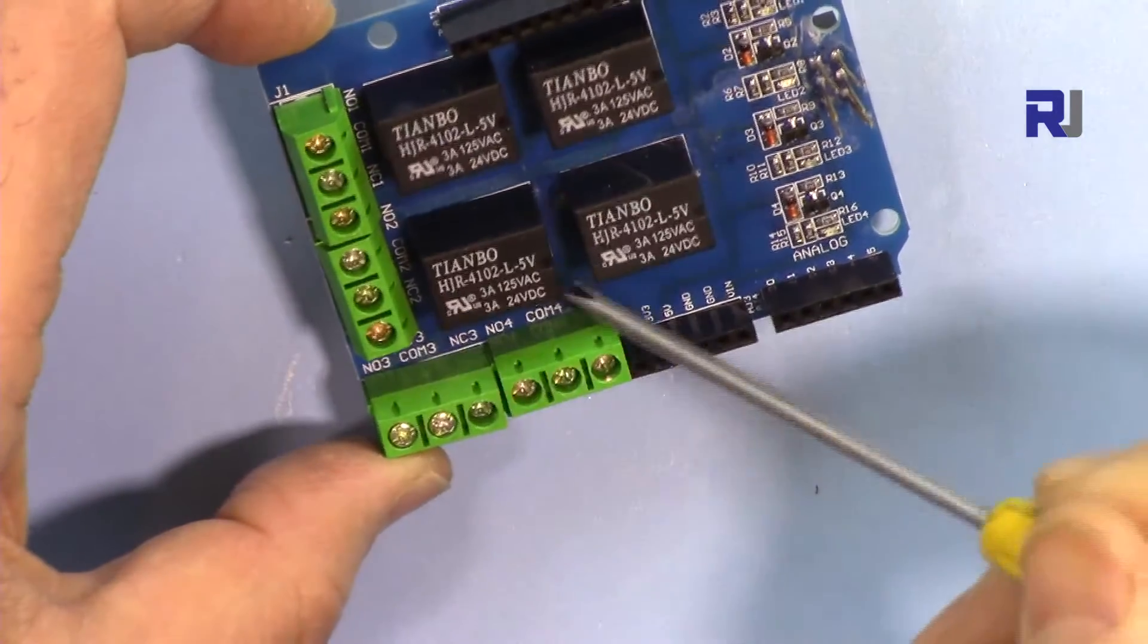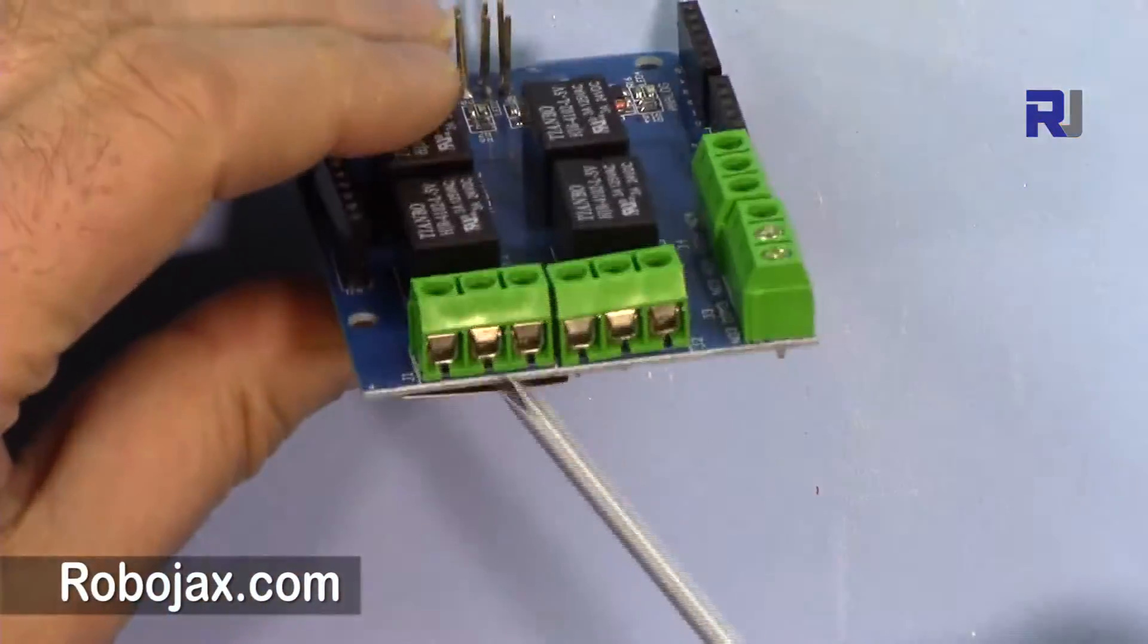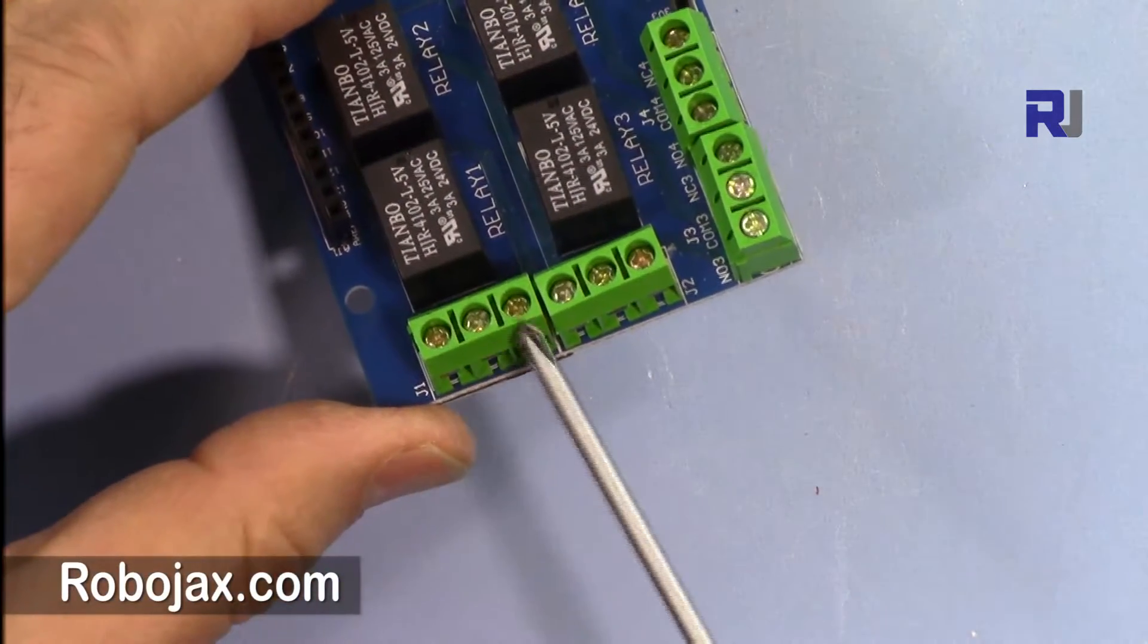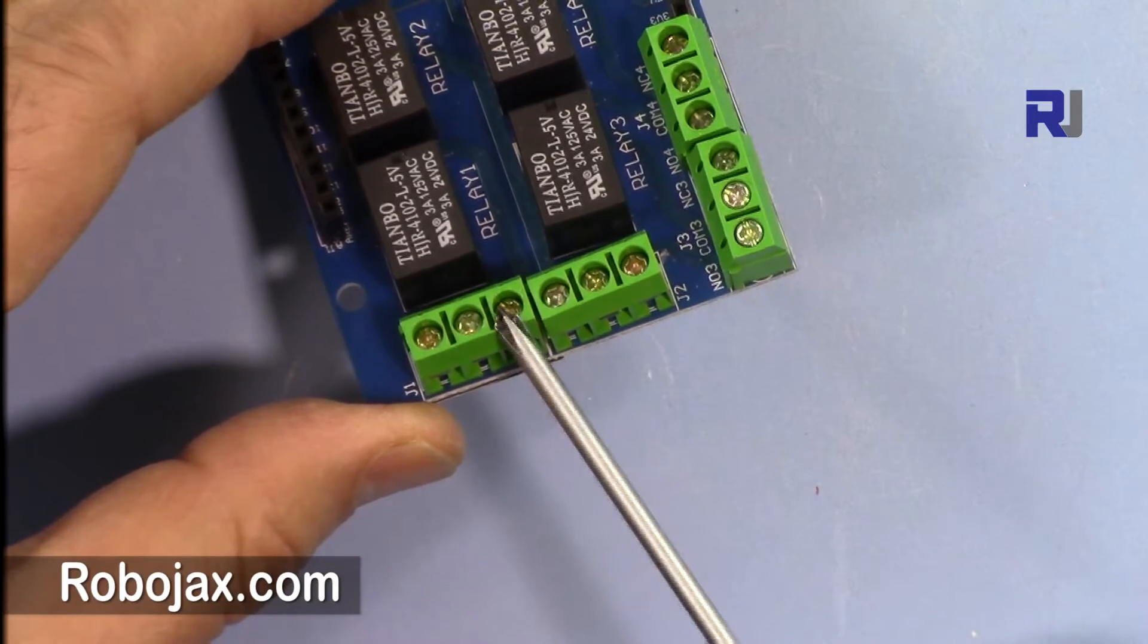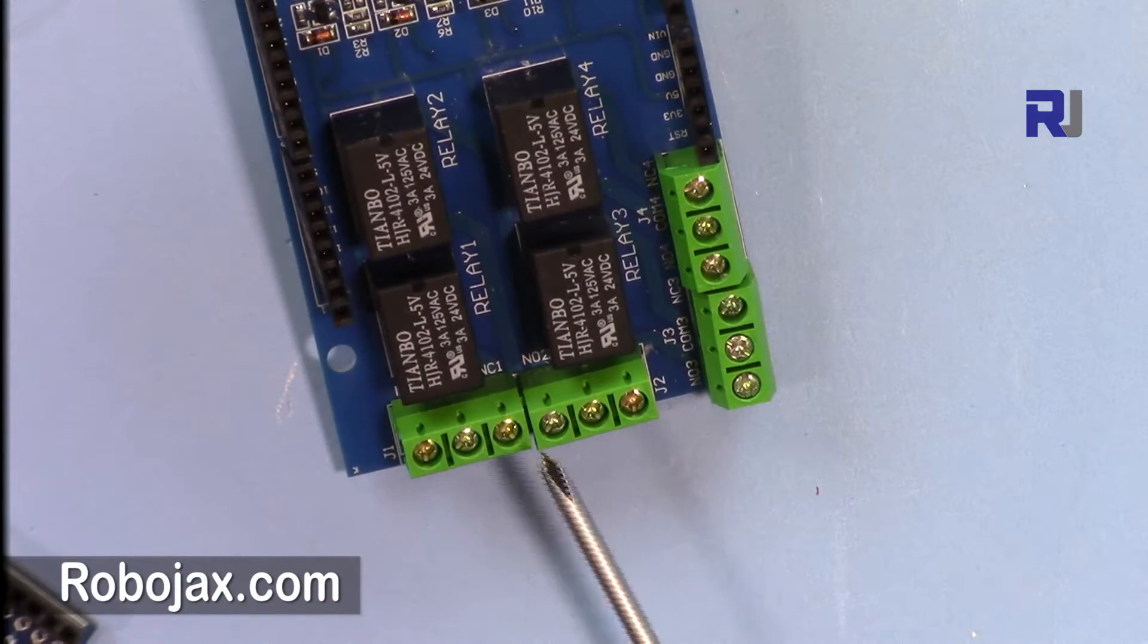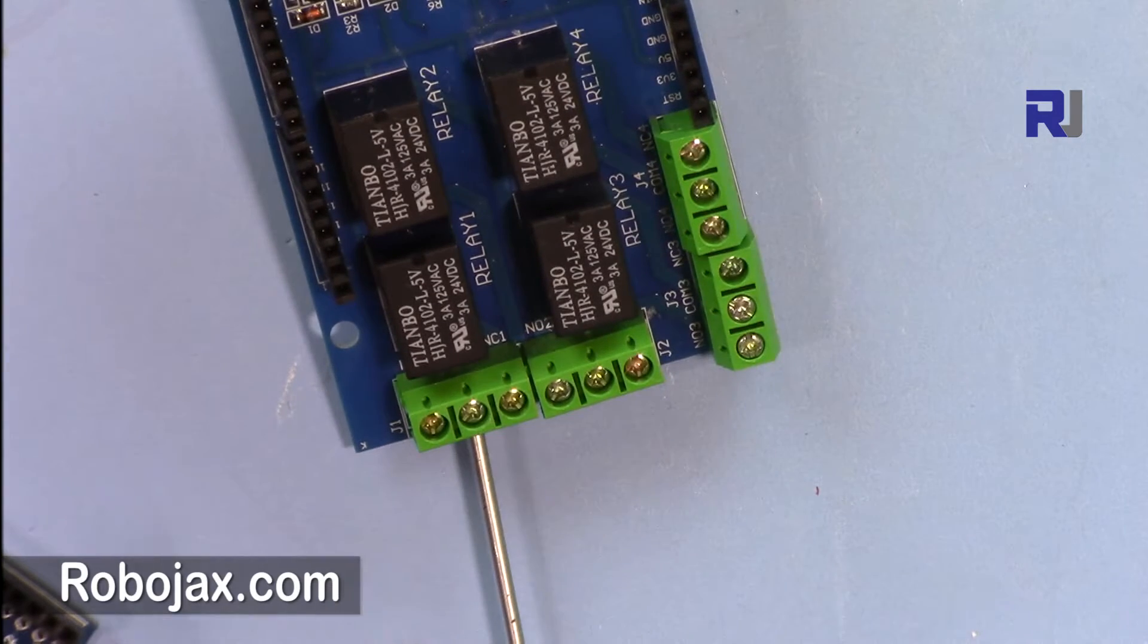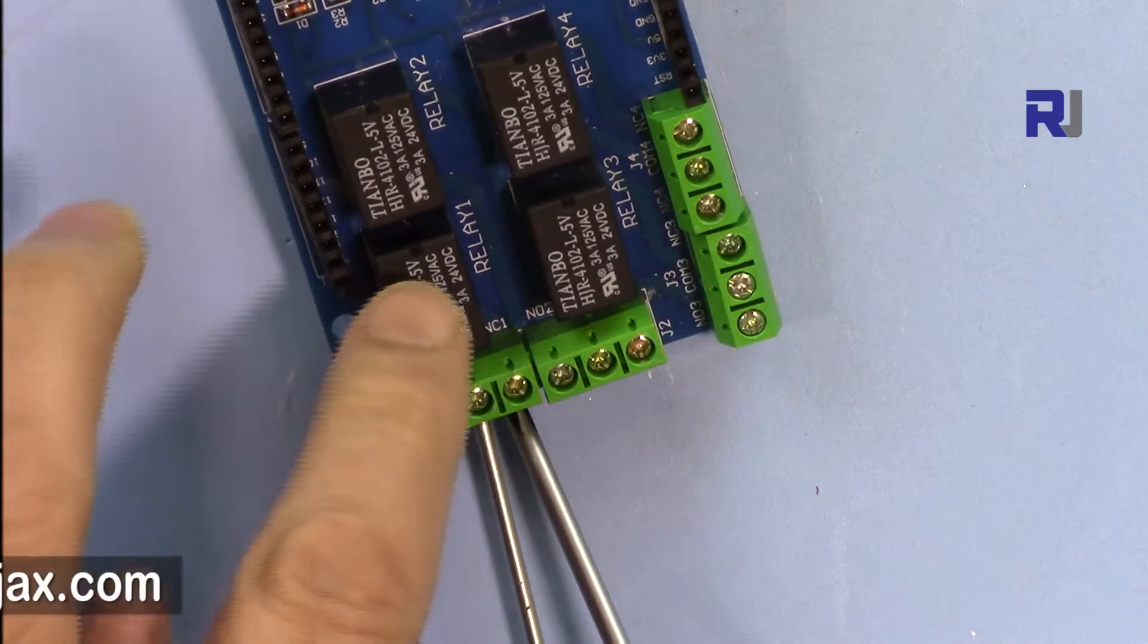And the pins for the relay are as follows: when you hold it this way, these two are normally connected, which means these are connected. And these two are normally open. So when you connect it, you will connect your wires like this: one wire at the middle and the other wire. If you want normally connected, it should be here. So when the relay is energized or the signal comes, it will be disconnected.